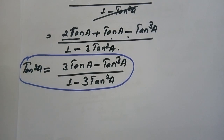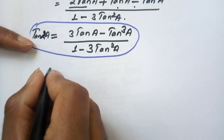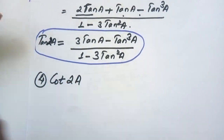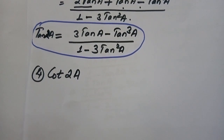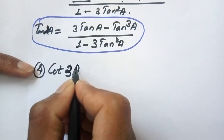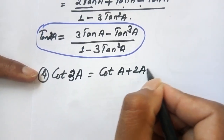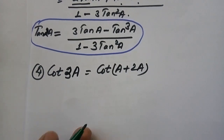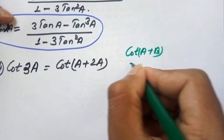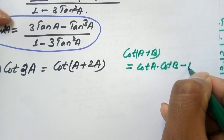Now for the last formula, cot 3a. We write cot 3a as cot(2a + a) and use the same process with the compound angle formula for cot: cot(a+b) = (cot a dot cot b minus 1) upon something. Following the same process, the final result for cot 3a is: cot 3a equals (3 cot a minus cot cube a) upon (1 minus 3 cot square a).